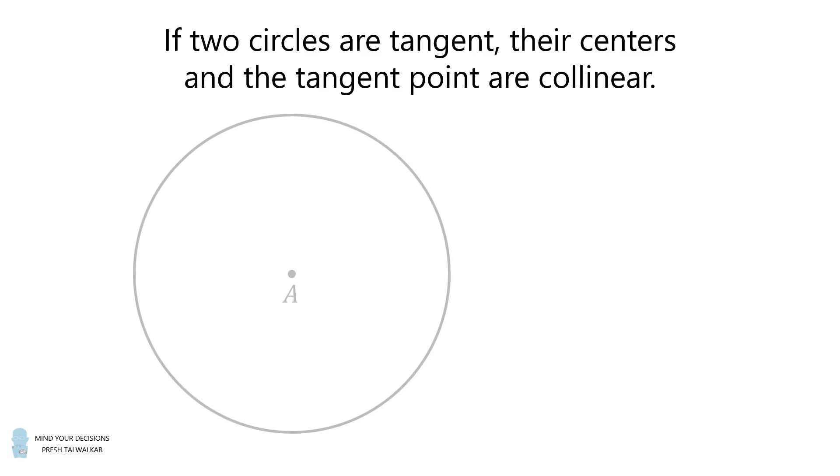Recall, if two circles are tangent, their centers and the tangent point are collinear. That's because the tangent line through t will be perpendicular to the radius a t, and the tangent line through t will also be perpendicular to the radius b t. Therefore, a t b is a straight line segment. That's true for both externally and internally tangent circles.